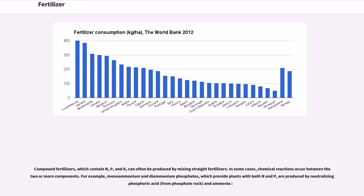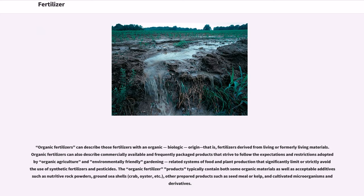Potash compound fertilizers, which contain N, P, and K, can often be produced by mixing straight fertilizers. In some cases, chemical reactions occur between two or more components. For example, monoammonium and diammonium phosphates, which provide plants with both N and P, are produced by neutralizing phosphoric acid from phosphate rock with ammonia. Organic fertilizers can describe those fertilizers with an organic (biologic) origin — that is, fertilizers derived from living or formerly living materials. They can also describe commercially available products that follow the expectations of organic agriculture, significantly limiting or avoiding the use of synthetic fertilizers and pesticides.